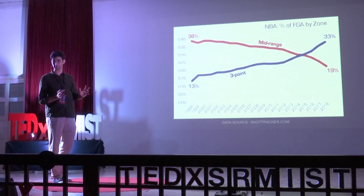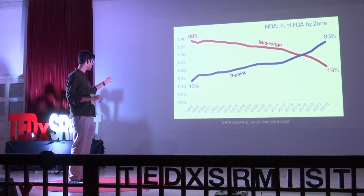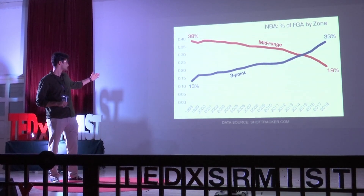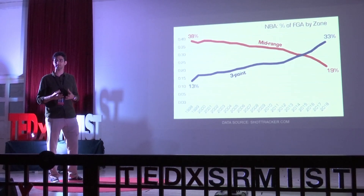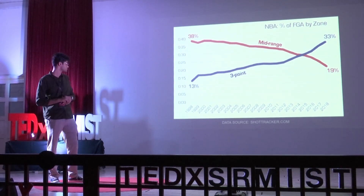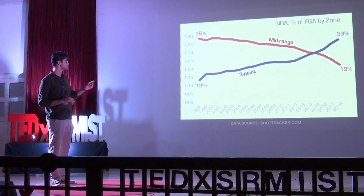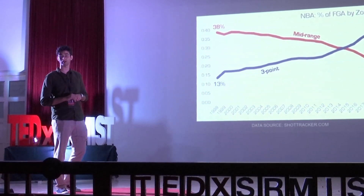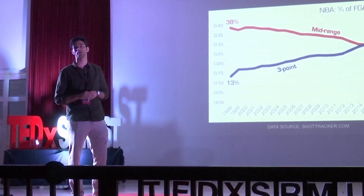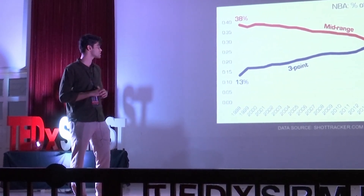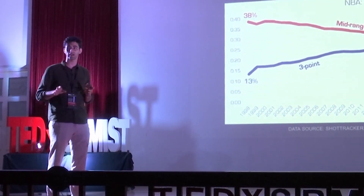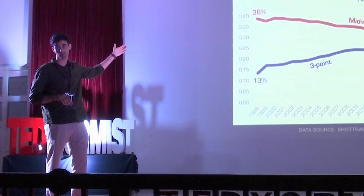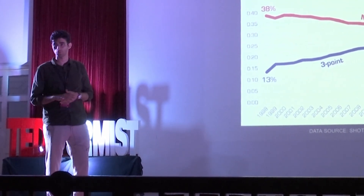Looking at the same data from another perspective: in 1998, the blue line shows that only about 13% of shots taken in any game were 3-point attempts — almost nothing. But two decades later, in the 2018 season, that figure rose to 33%, meaning one third of all shots were from beyond the 3-point line. A contrasting decline can also be seen in mid-range shots, which only give 2 points.